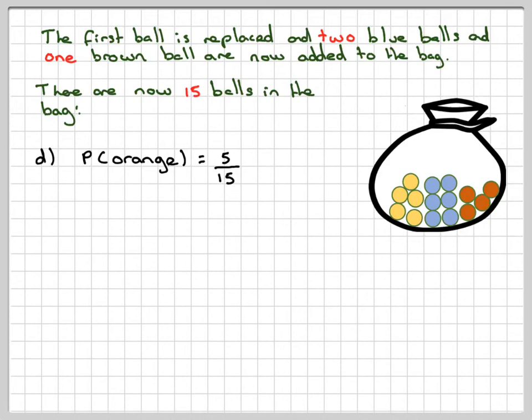5 out of 15 cancels down to one third. You should always make sure that your probabilities are cancelled down and expressed as fractions.